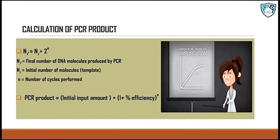The calculation of the PCR product is done using two major formulas. The first is: NF = NI × 2^N, where NF is the final number of DNA molecules produced, NI is the initial number of molecules used as a template, and N is the number of cycles performed. The second formula is: PCR product = initial input amount × (1 + percentage efficiency)^N, where N is the number of cycles performed. Remember, these two formulas are very important for any life science exam.